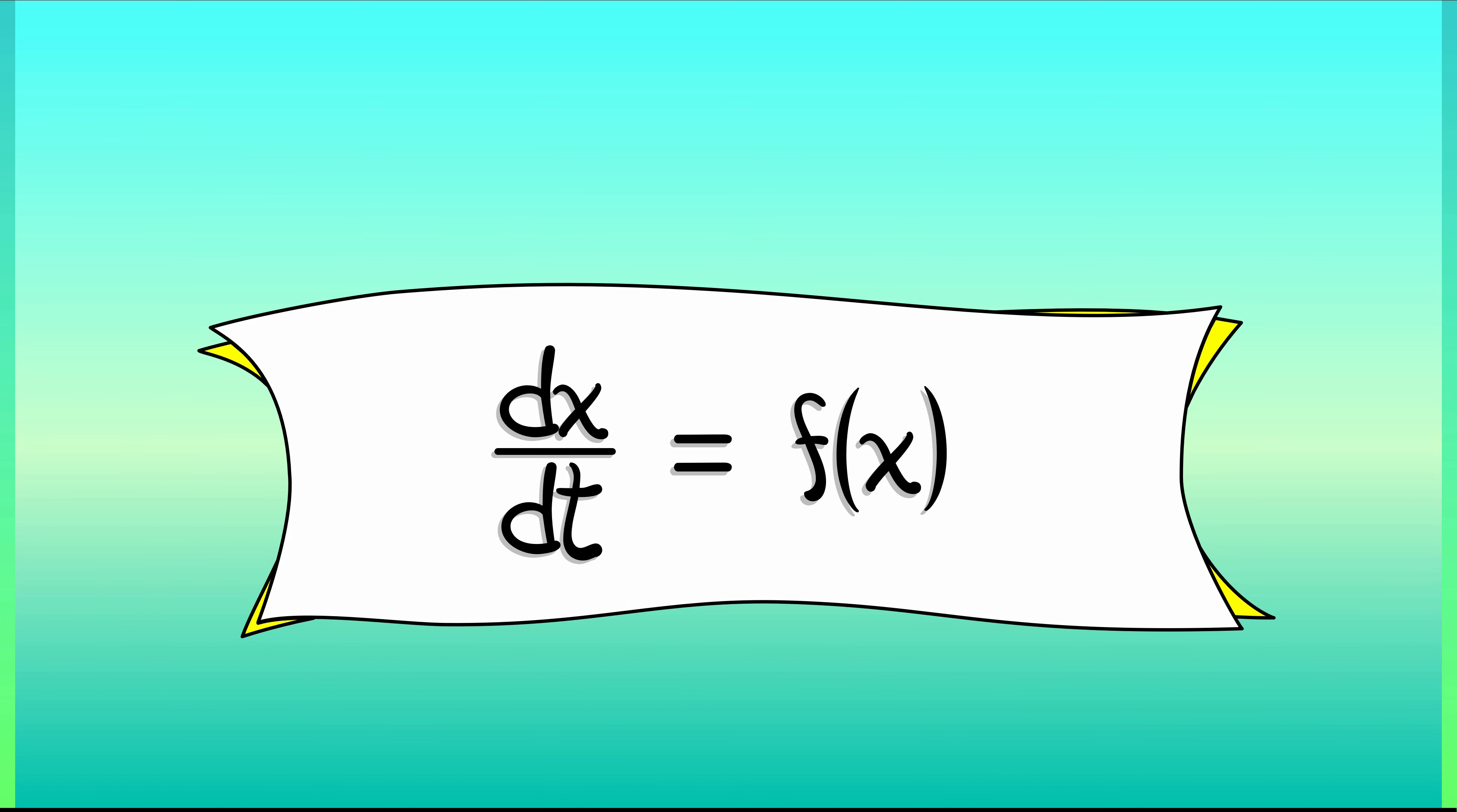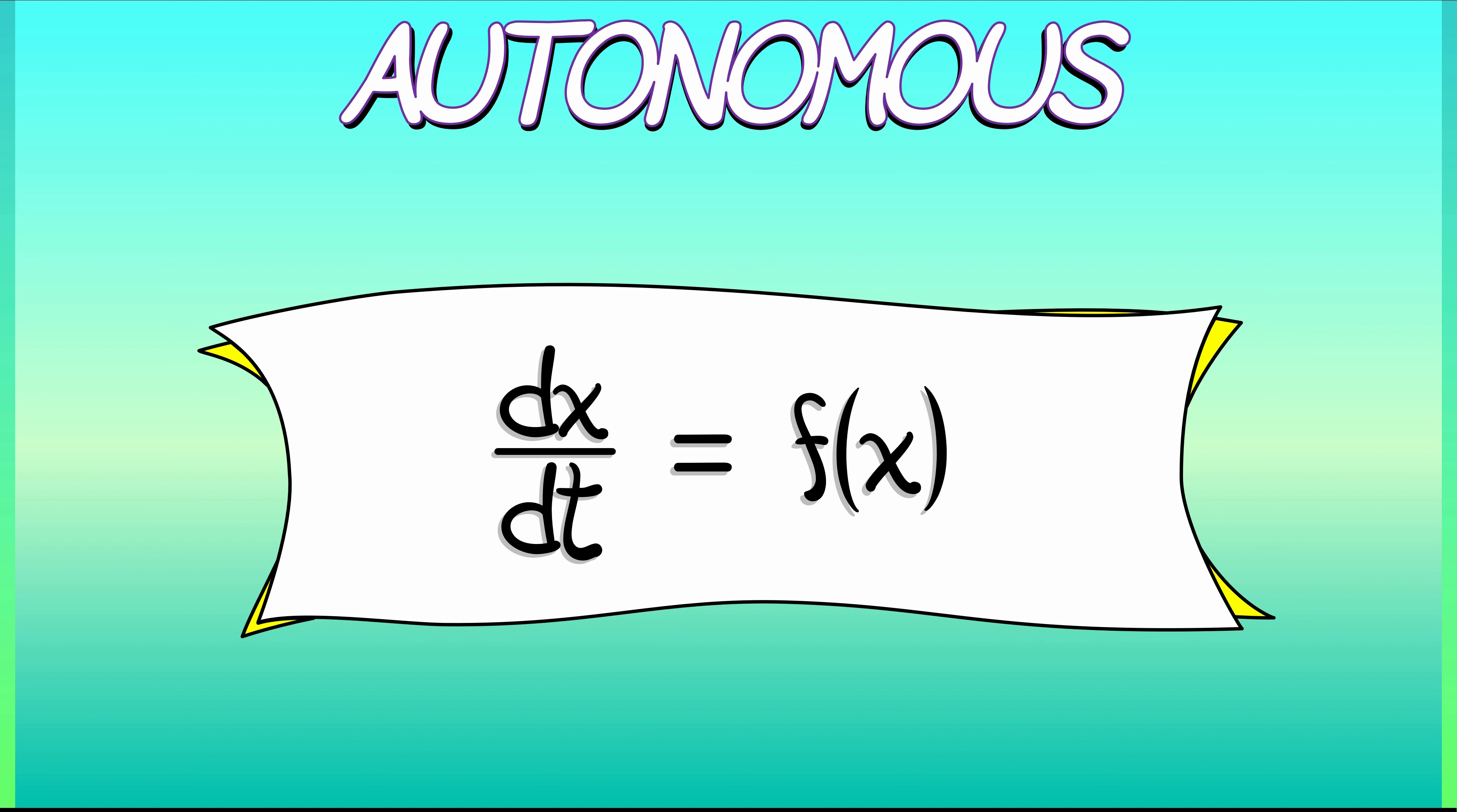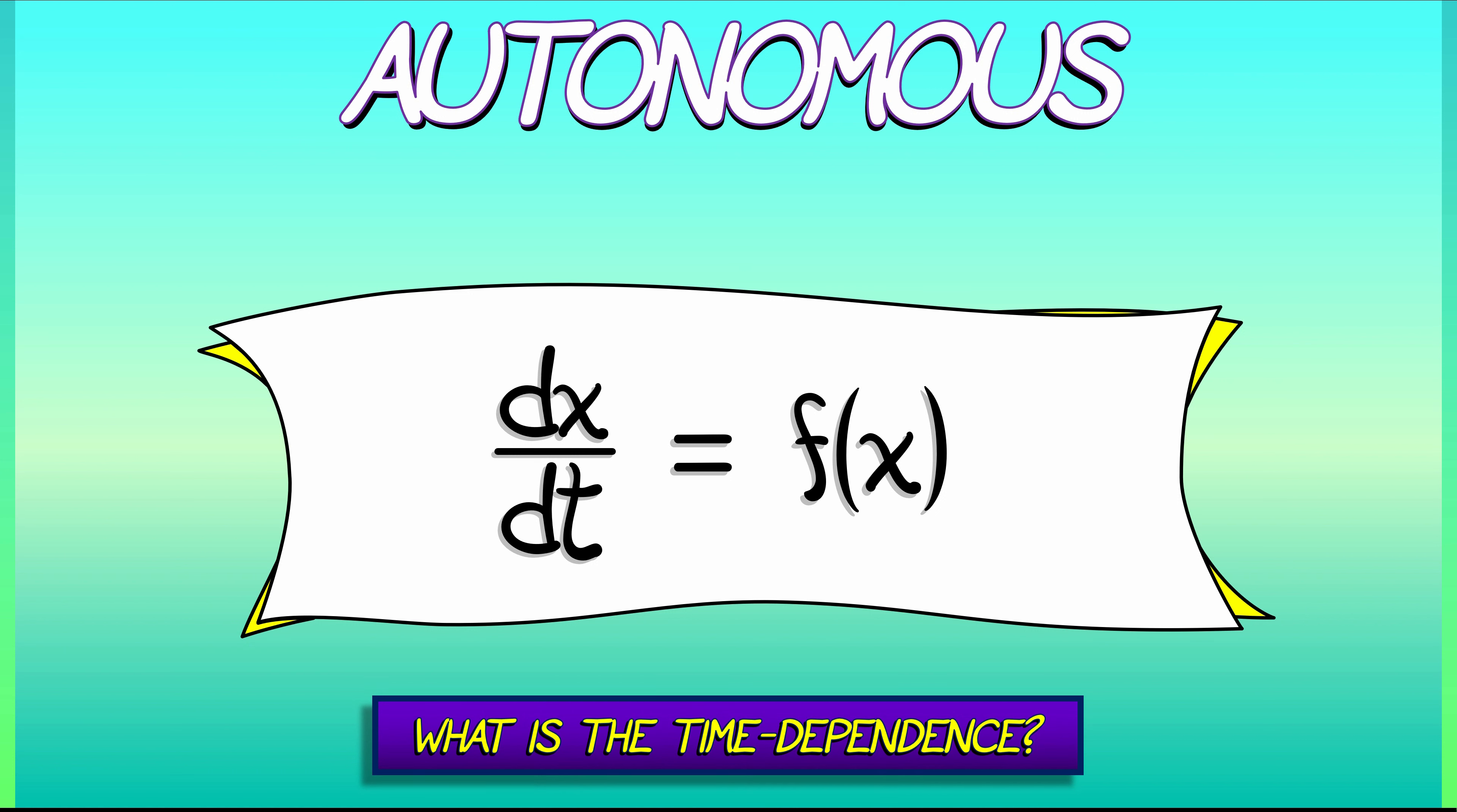These are special differential equations called autonomous differential equations because of the way that time dependence works. In an autonomous differential equation, the rate of change of the state variable x just depends on x itself, mediated by this right-hand side, f of x.